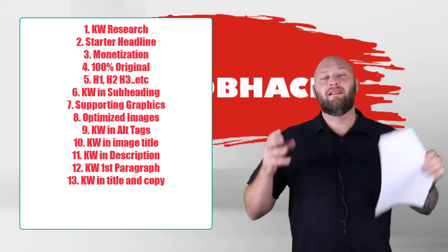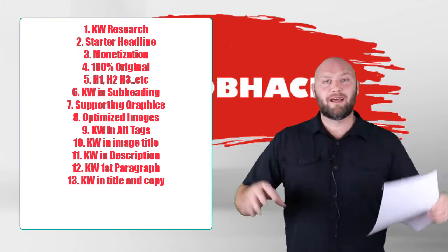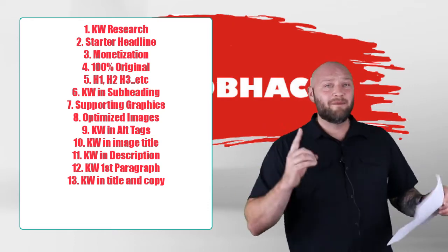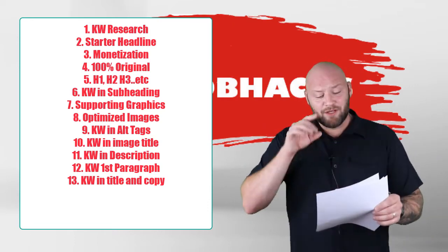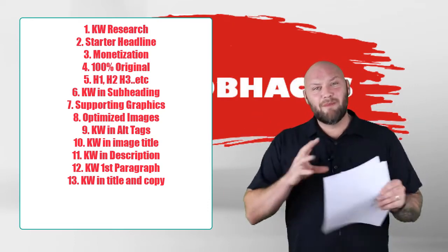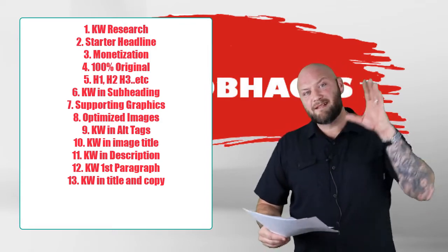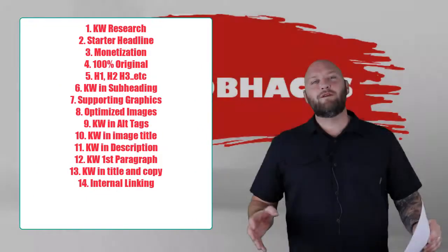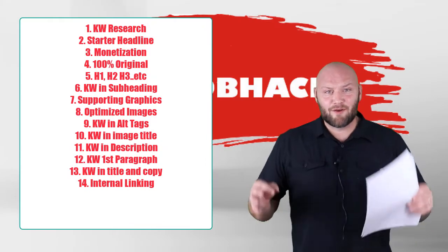Number twelve: use your primary keyword in the first paragraph — this is extremely important. Number thirteen: use your primary keyword in the title and naturally throughout the copy. Your whole blog post should naturally use the primary keyword, as well as in your title, meta descriptions, alt tags, and all that. Make sure you follow the checklist so you don't miss any of them.